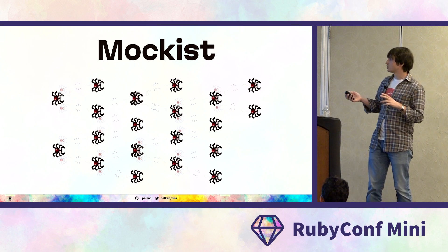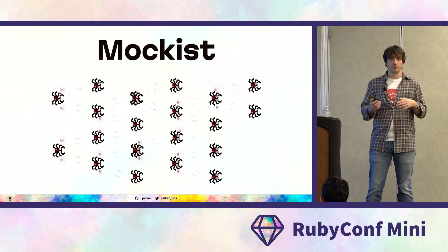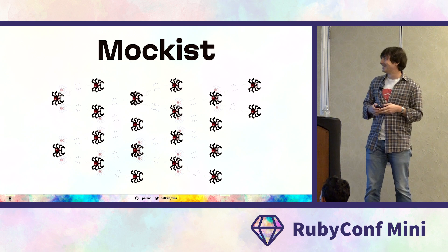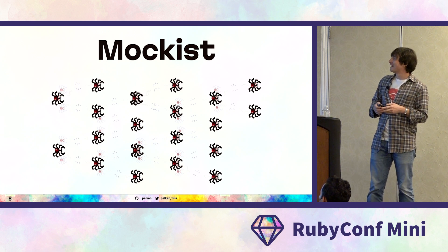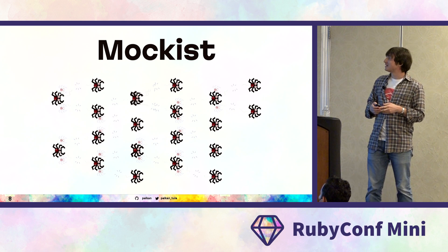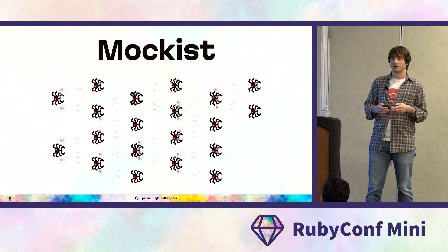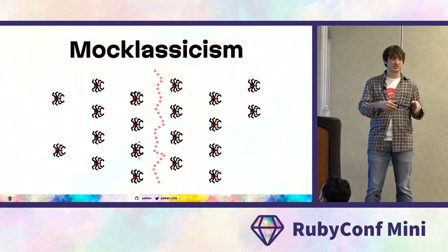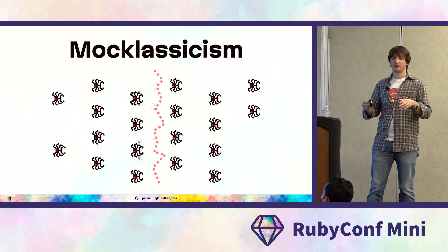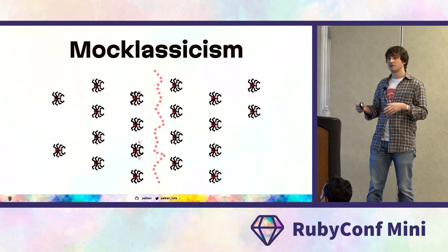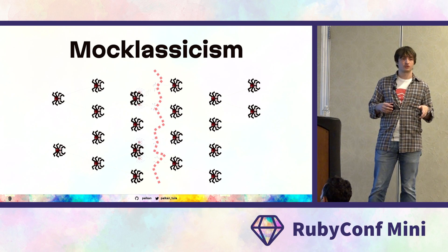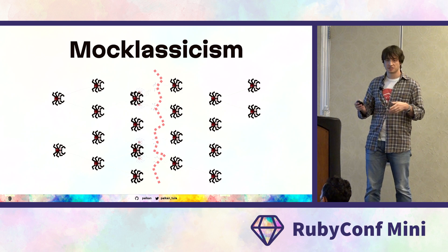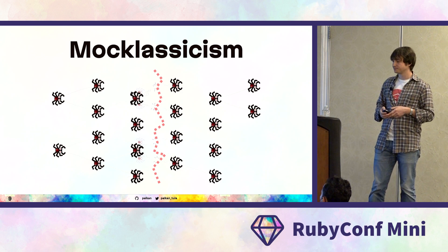Such a picture is not typical for Rails or Ruby applications. Usually we mix both styles, and from my experience, Ruby developers prefer to go classical and introduce mocks in some places. But even using this mixed approach, we can hit this disconnection problem — a disconnected graph.